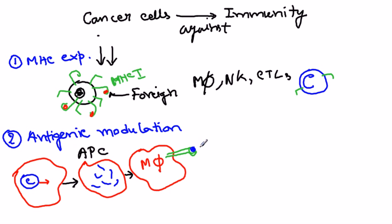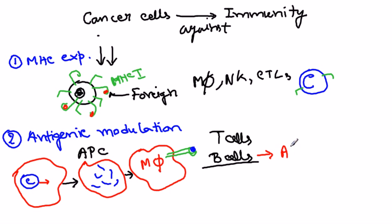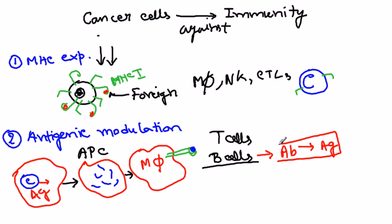When these antigens are recognized, T cells and B cells are trained. B cells produce antibodies, and after this process these antibodies go against the antigen found on the cancer cell. An antigen-antibody complex forms and can be eliminated. This is another mode of immune response.